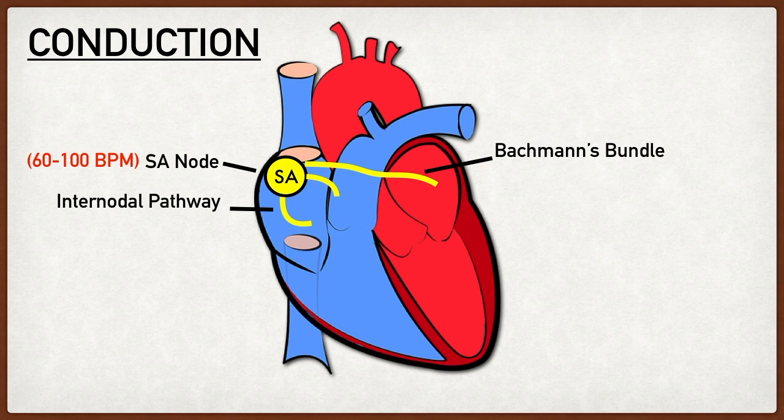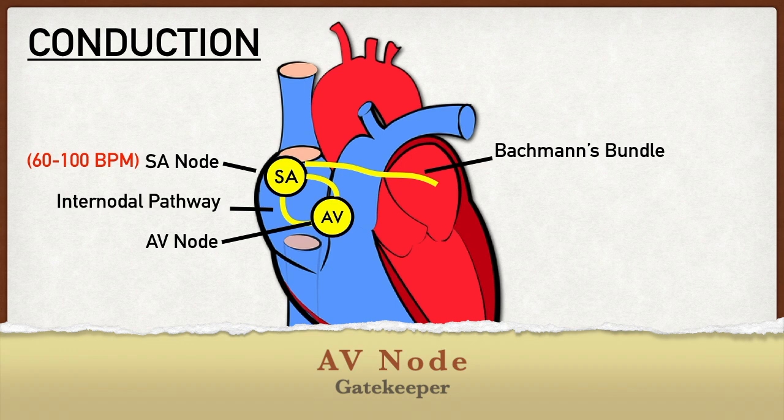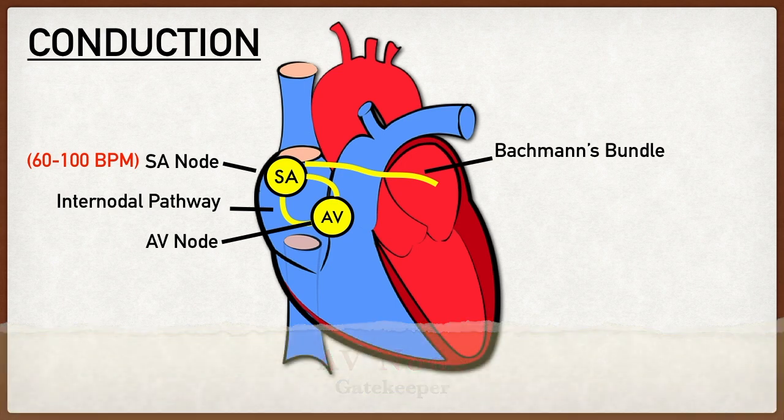Once the action potential generated by the SA node travels through the left and right atria via the internodal pathway, it converges on another node called the AV node. The AV node is located at the base of the right atrium near the intraventricular septum, and it acts as a gatekeeper sending the action potential from the atria down to the ventricles.